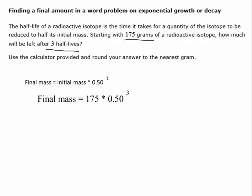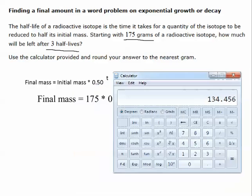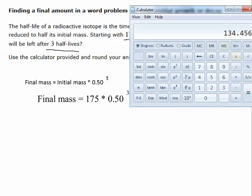So again, I'm going to pull up my calculator, and we're going to do this one together. So, exponents before multiplication. I'm going to put in my 0.50, and I'm going to raise it to the power of 3. I get 0.125. I'm then going to multiply that by my initial mass of 175, and I get 21.875.